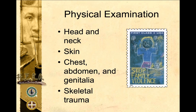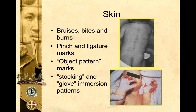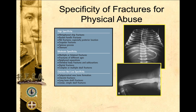For physical examination, you check the head, neck, skin, chest, abdomen, genitalia, and skeletal trauma. In the head and neck look for swelling, abrasions, lacerations, bruises, uneven skull for fractures, bulging skull for bleeding, bleeding in the mouth, tooth decay, bleeding in the eyes, or deformed ears. For the skin, check for bruises, bites, burns, pinch and ligature marks, object pattern marks — for example a belt mark on the skin — and immersion patterns such as hot water injuries, where the hand or foot was placed in hot water.